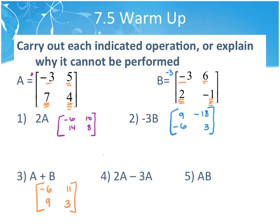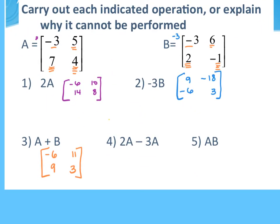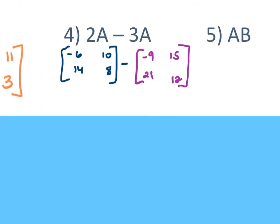Then comes 2A minus 3A — and that's not a typo. You can combine the same matrix. I first distribute 2 into A to get negative 6, 10, 14, 8. Then I distribute positive 3 to get negative 9, 15, 21, and 12. So subtracting: negative 6 minus negative 9 is 3; 10 minus 15 is negative 5; 14 minus 21 is negative 7; and 8 minus 12 is negative 4.